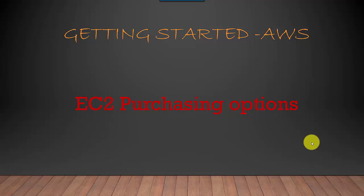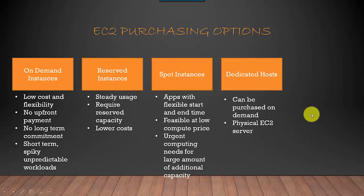Hey everyone, in this video we will talk about the EC2 purchasing options. When you're trying to get an EC2 instance, there are four types primarily available: on-demand instances, reserved instances, spot instances, and dedicated hosts.